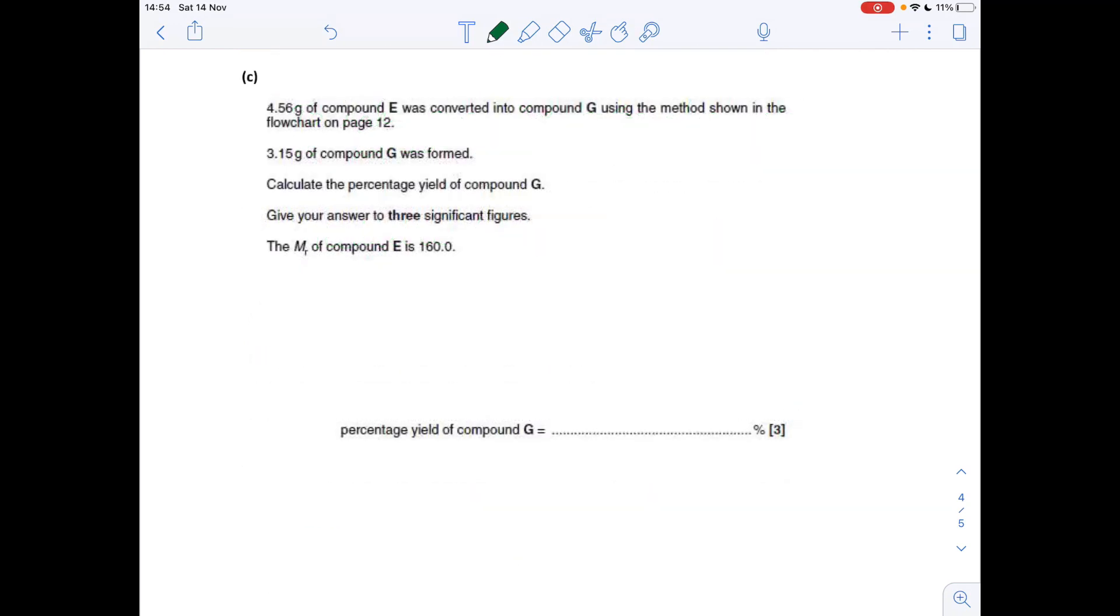And the final question, we've got to work out the percentage yield for compound G. So the first thing I'm going to do is work out the moles of E that's being used. Mass over MR, 4.56, and we're told the MR of E is 160. So that comes out at 0.0285. The moles of G that's formed, mass over its MR, so 3.15. Its MR is 174. And that comes out at 0.0181.